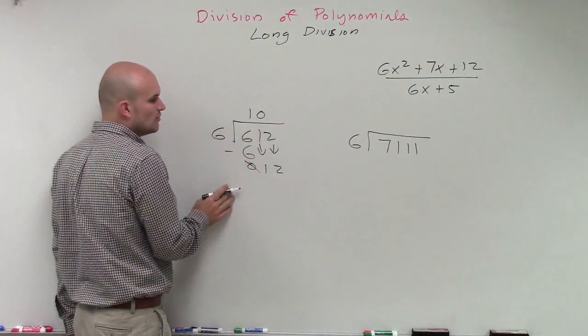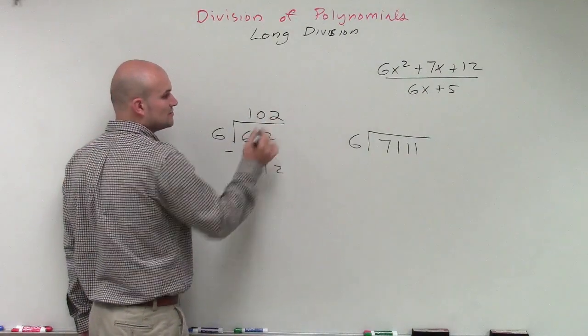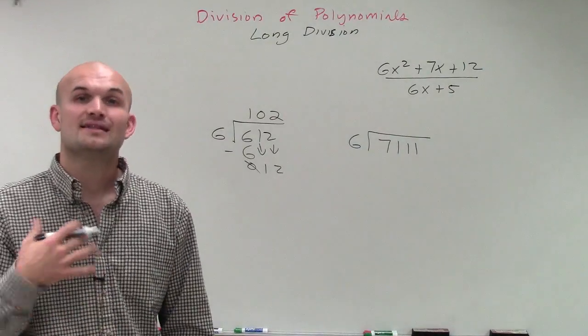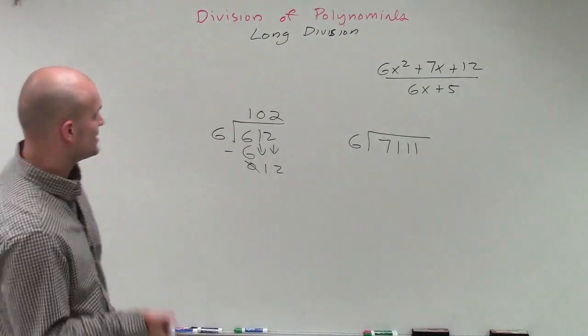Does 6 divide into 12? Yes, it does. It does two times. Therefore, we can say now our answer is 612 divided by 6. The answer to that, which we call our quotient, is 102.